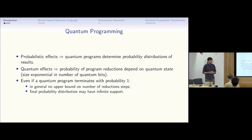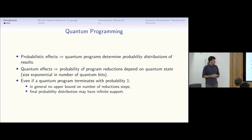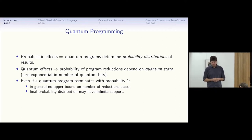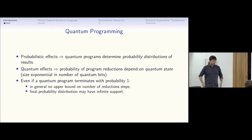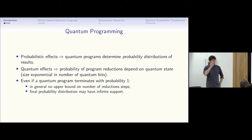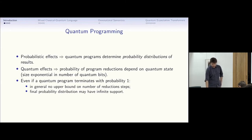Even in nice situations where a quantum program is almost surely terminating — meaning it terminates with probability one — we can end up in situations where there is no upper bound on the number of reduction steps performed. In general, we can end up computing infinitely many values with some probability, so the probability distribution may have infinite support. I'm really talking about quantum programs and not about quantum circuits.